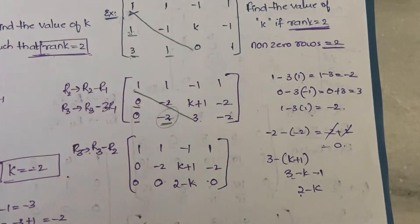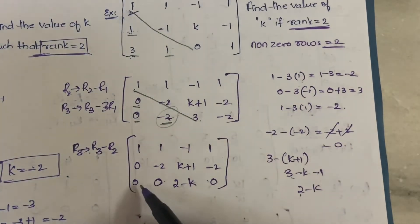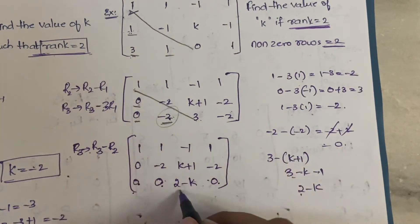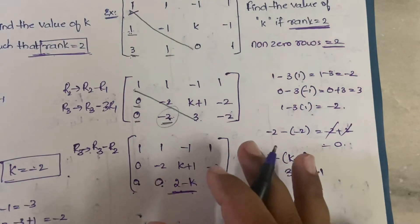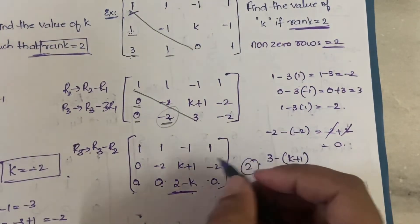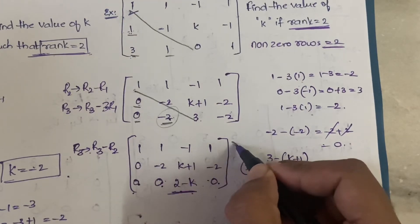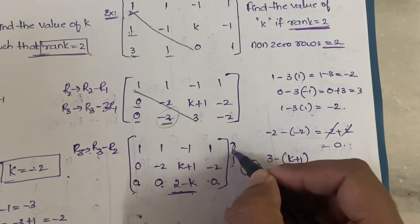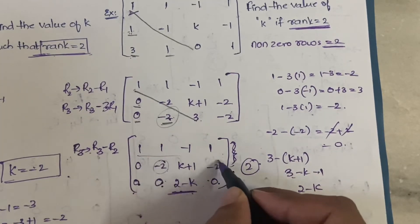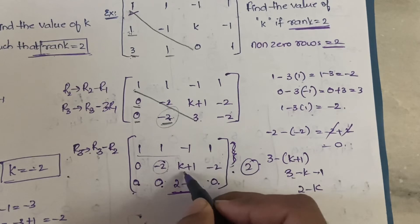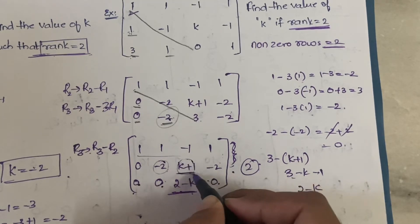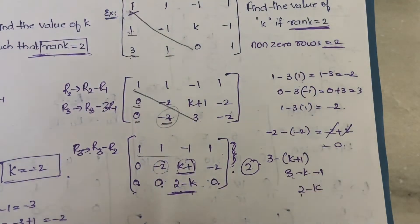Now we can observe that in the third row all three elements are zero. We have only one non-zero element here, so the rank of the matrix is 2. These two rows are non-zero rows — the first row has no zeros, and the second row has minus 2 and minus 2 which we cannot change. But we can make the value 2 minus k equal to zero.